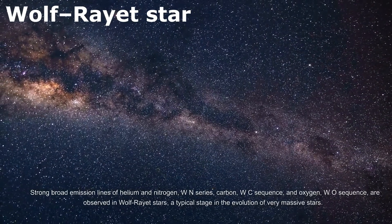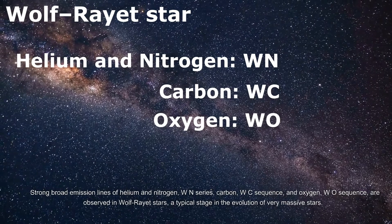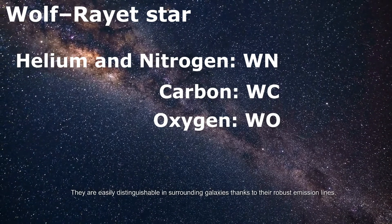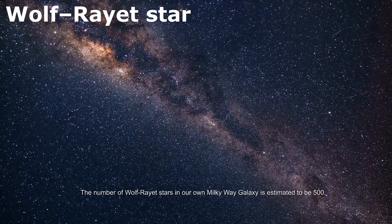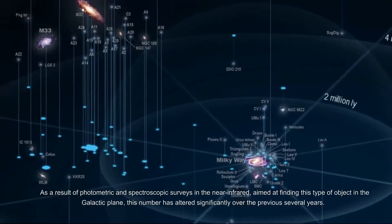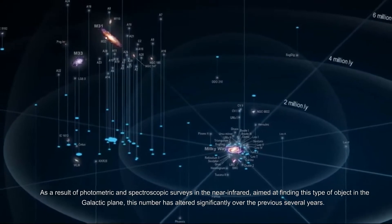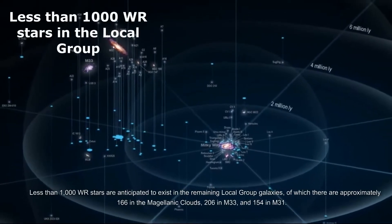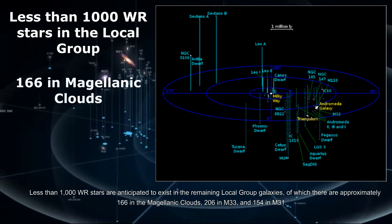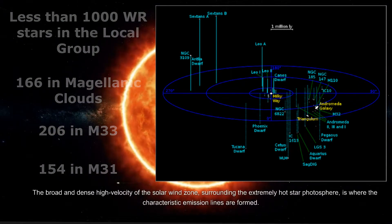Strong broad emission lines of helium and nitrogen (WN series), carbon (WC sequence), and oxygen (WO sequence) are observed in Wolf-Rayet stars. They are a typical stage in the evolution of very massive stars and are easily distinguishable in surrounding galaxies thanks to their robust emission lines. The number of Wolf-Rayet stars in our own Milky Way galaxy is estimated to be around 500. Less than 1,000 WR stars are anticipated in the remaining local group galaxies, with approximately 166 in the Magellanic Clouds, 206 in M33, and 154 in M31.